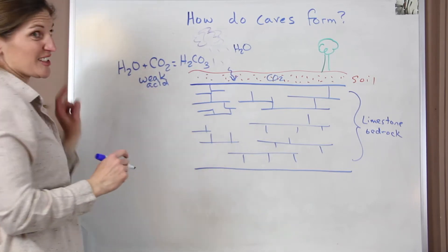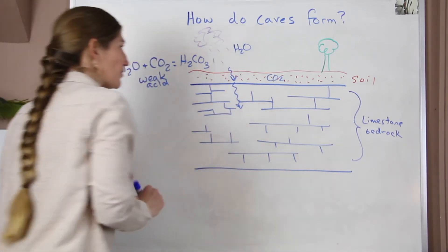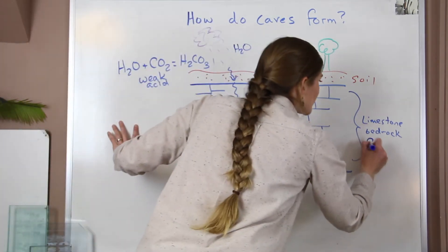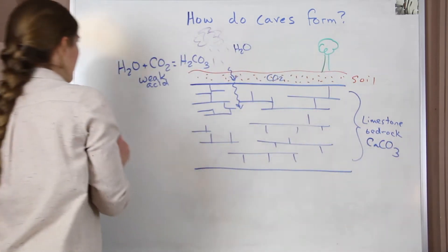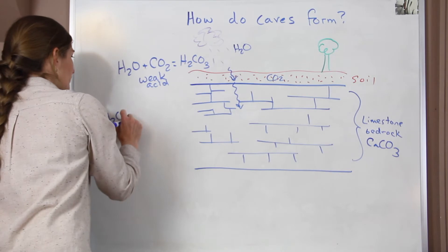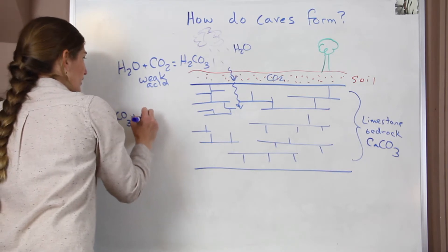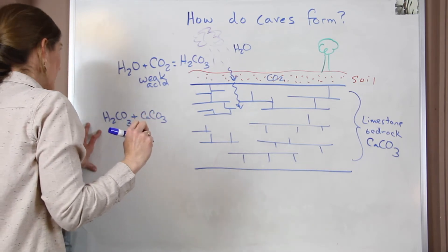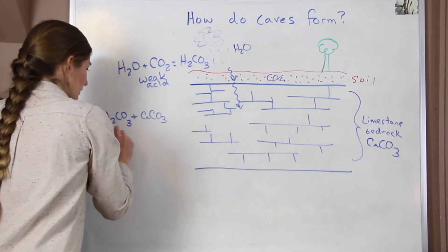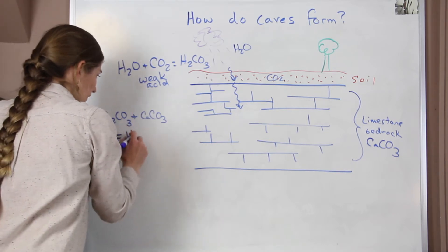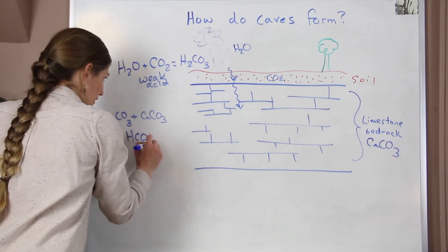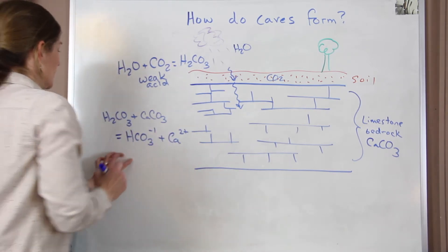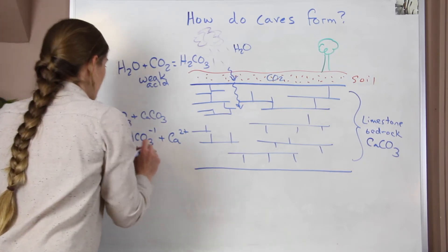But it is strong enough that when it starts to move through the limestone bedrock, and the bedrock is made out of calcium carbonate, CaCO3, when that carbonic acid joins with calcium carbonate, what we start to see forming is that it breaks it down into bicarbonate. So HCO3 minus 1 and calcium, which is a plus 2 charge. So these are ions.